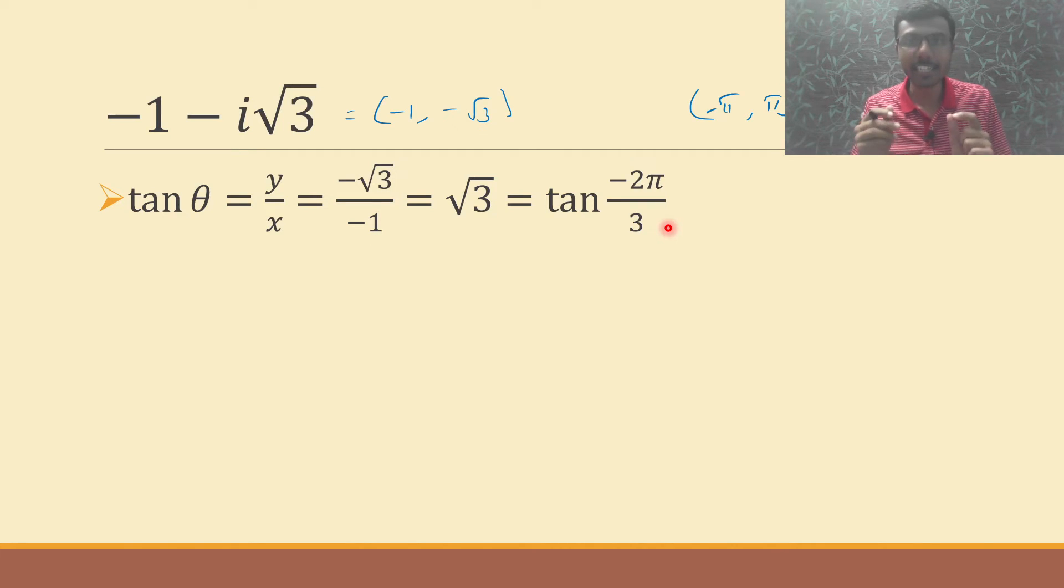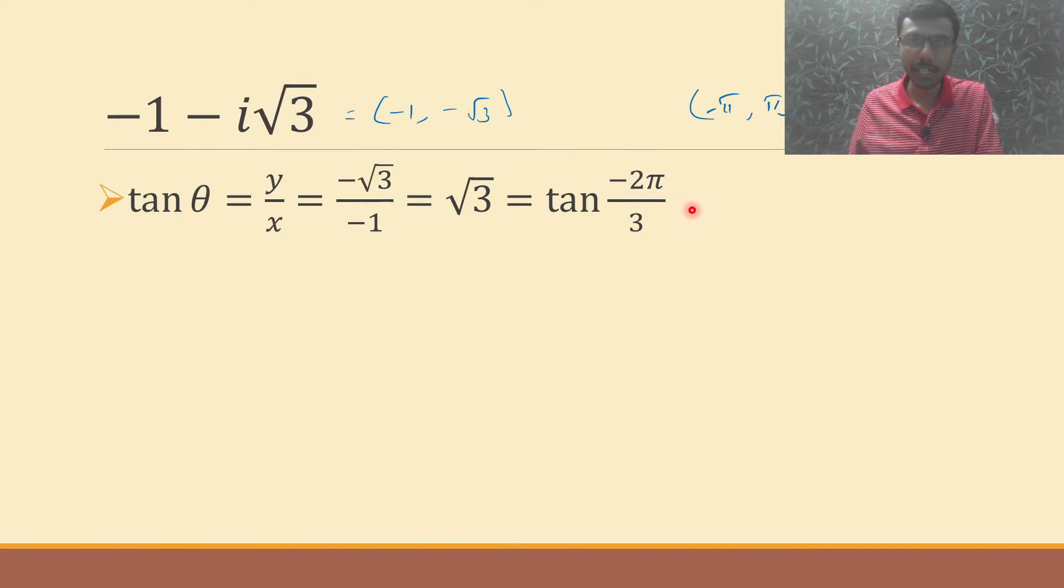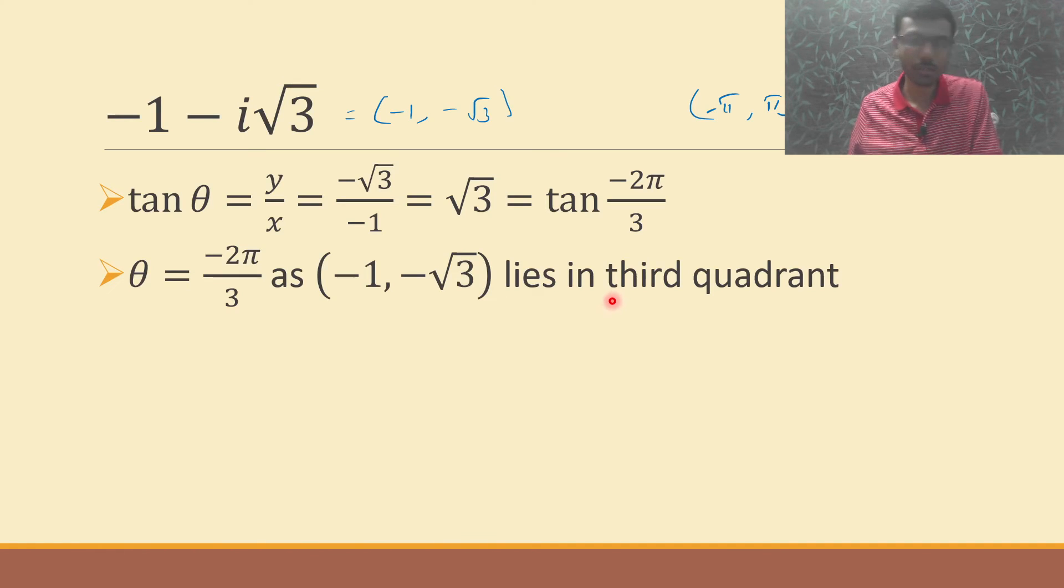In case if you want detailed expression on how did I get this argument as -2π/3, please put it in the comment box, I'll help you out there. So θ is nothing but -2π/3 as (-1, -√3) lies in the third quadrant.